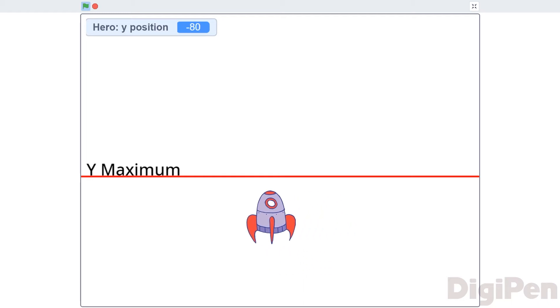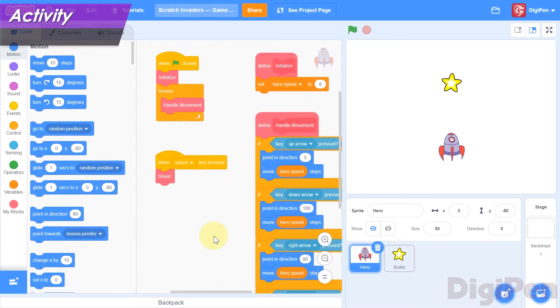The basic idea of the boundary check that we want to add to Scratch Invaders is simple. We compare the hero's y position to a maximum value. If it's greater than the maximum, then they've gone too far upward, and we pull them back down to the maximum. Naturally, we'll make a variable for this maximum value.